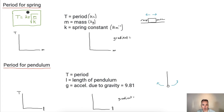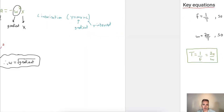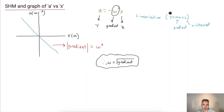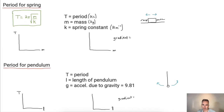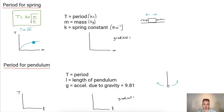Let's say we did an experiment and found values for mass and the corresponding period of oscillation. We can use linearization. If we just graphed T versus m, since T is proportional to the square root of m, the graph would be a curved square-root shape — and we can't easily find a meaningful gradient from that. So let's linearize it.